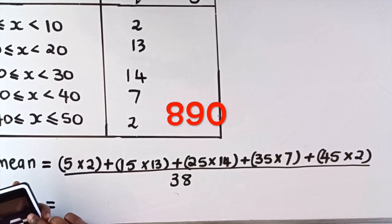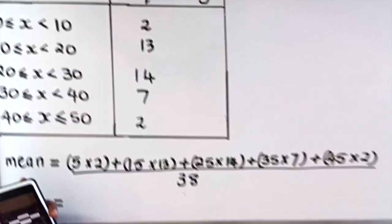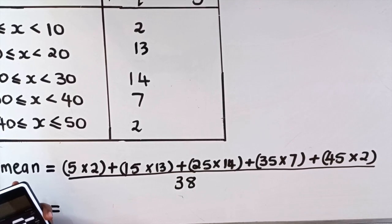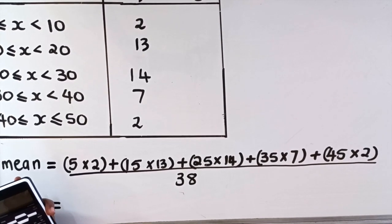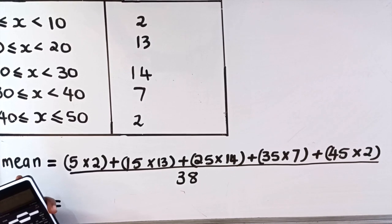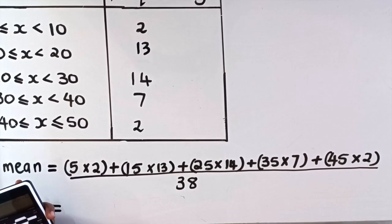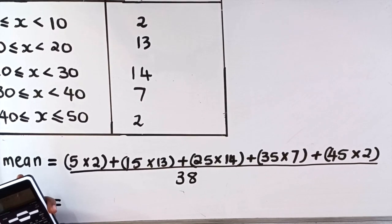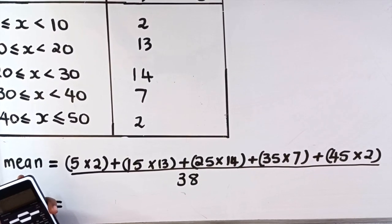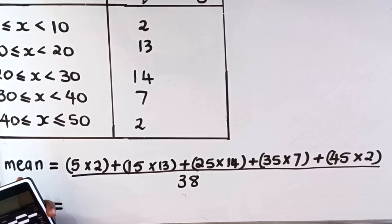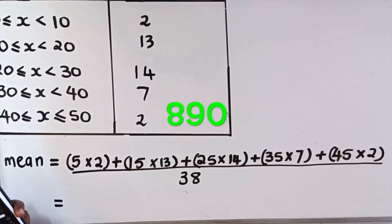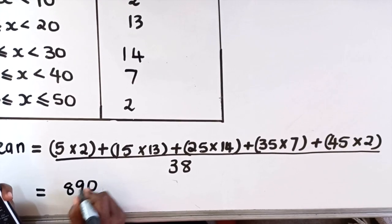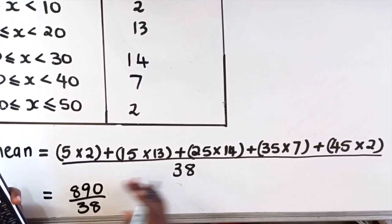5 times 2 plus 15 times 13 plus 25 times 14 plus 35 times 7 plus 45 times 2 gives me 890. So you're gonna have 890 divided by 38.